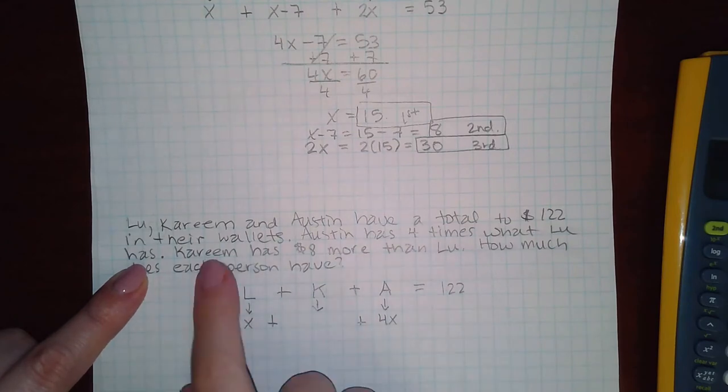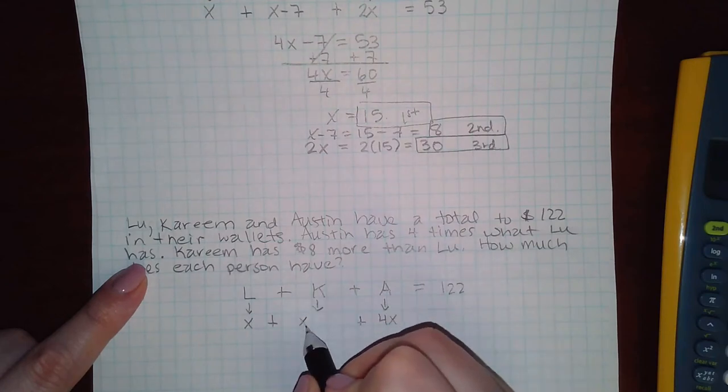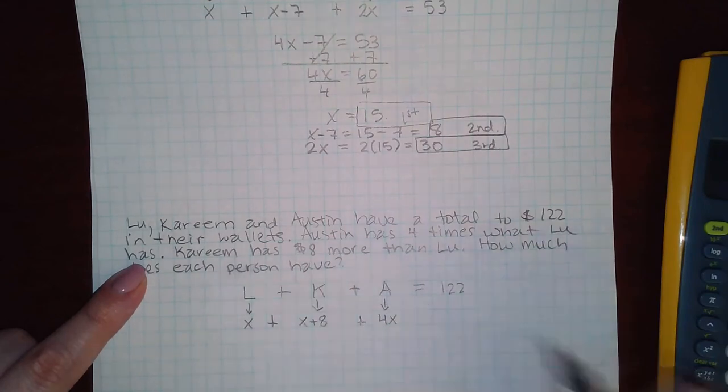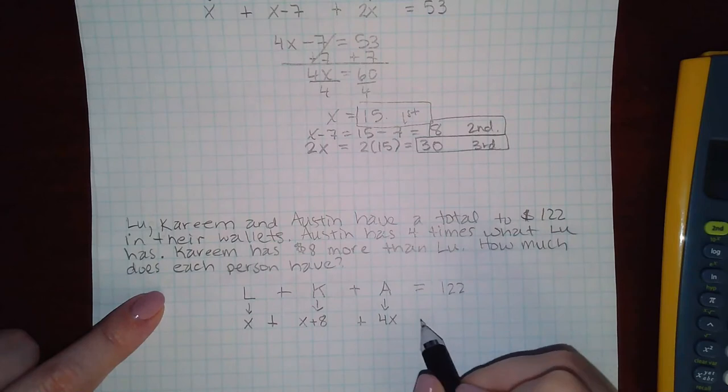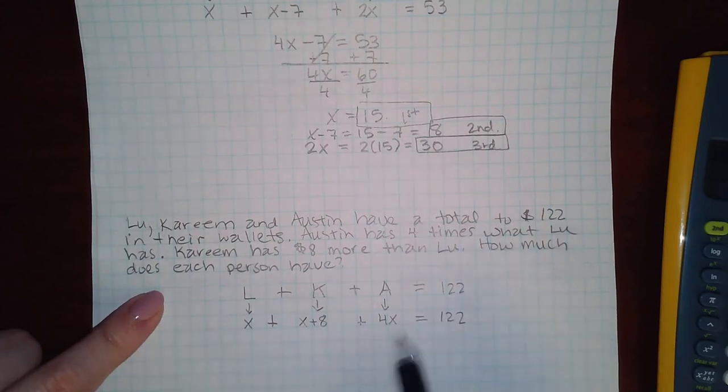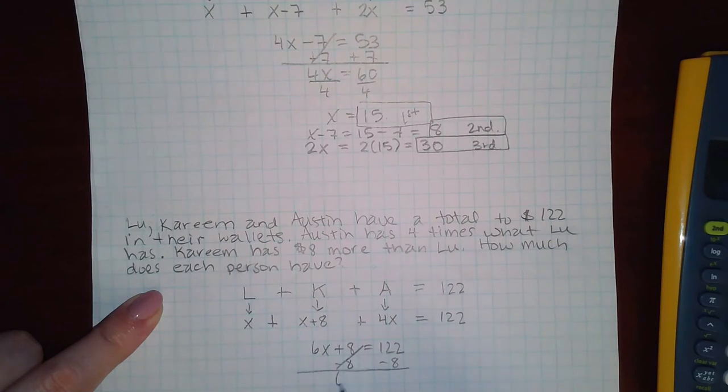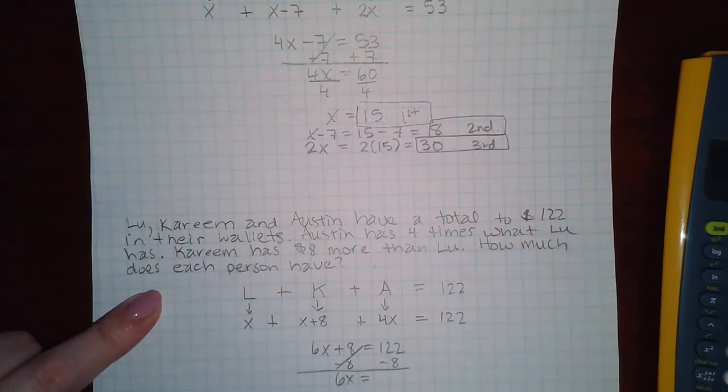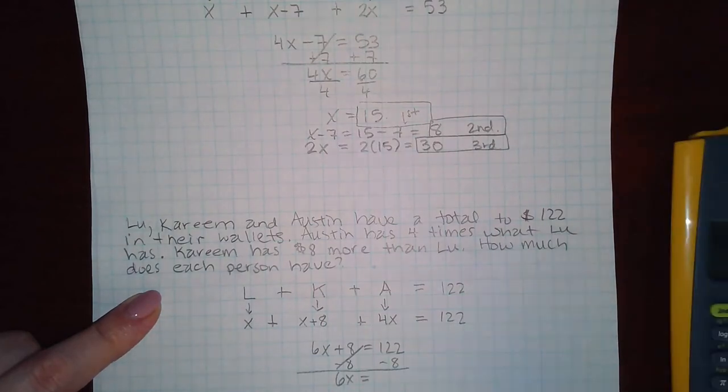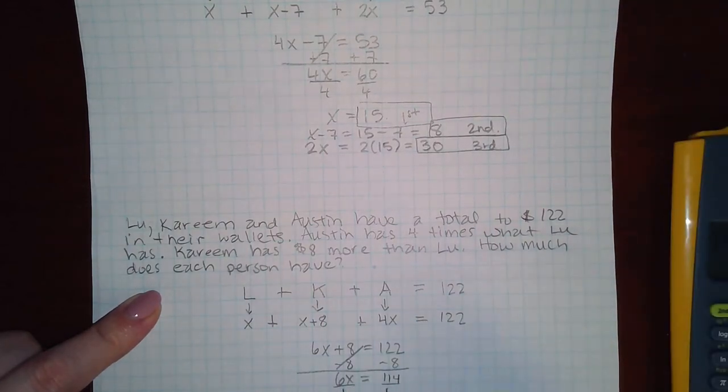Last is Kareem. Kareem has eight more than Lou, which means I'm going to take what Lou has and then add eight to it. How much does each one have? So if we combine like terms, we get 6x plus 8 equal to 122. And then if we solve for x, we subtract eight and then divide by six.